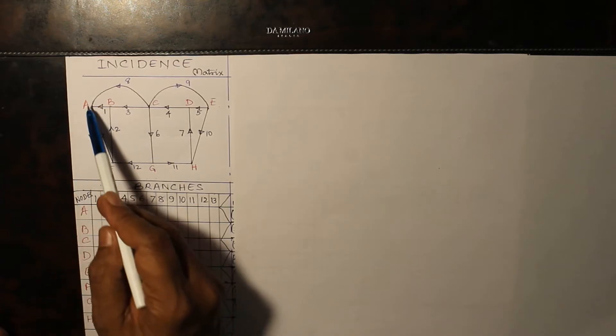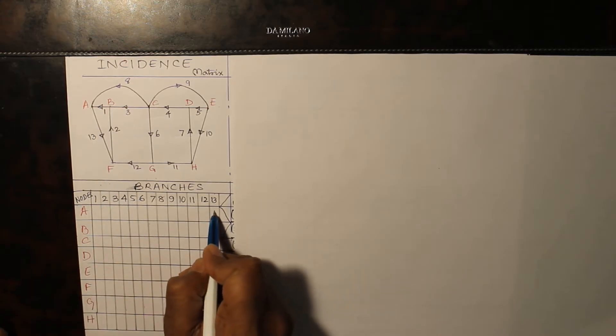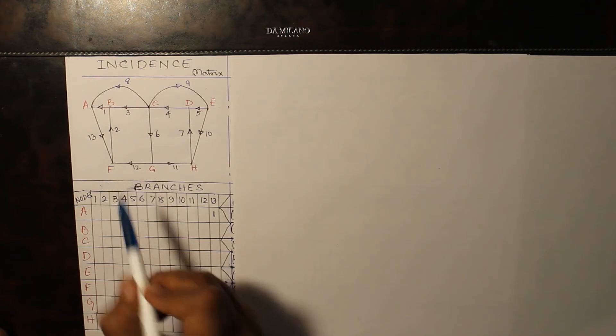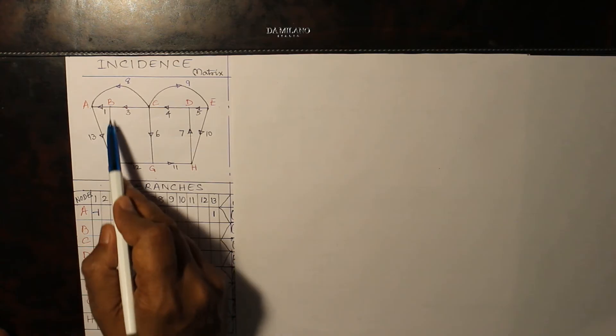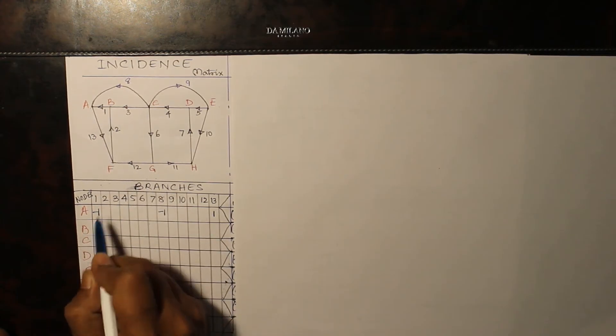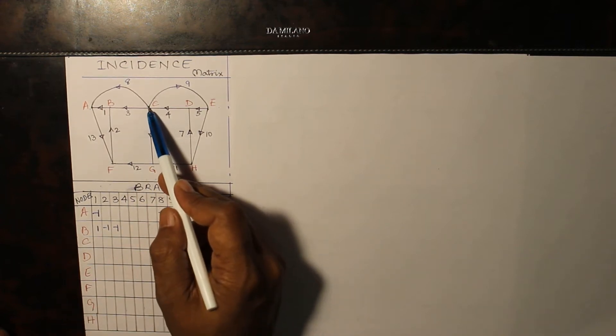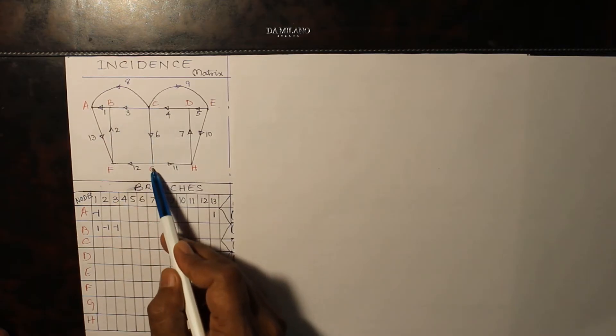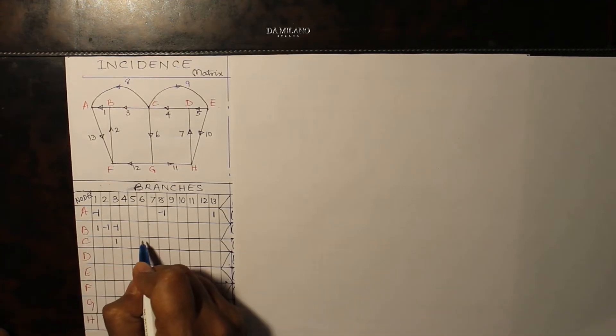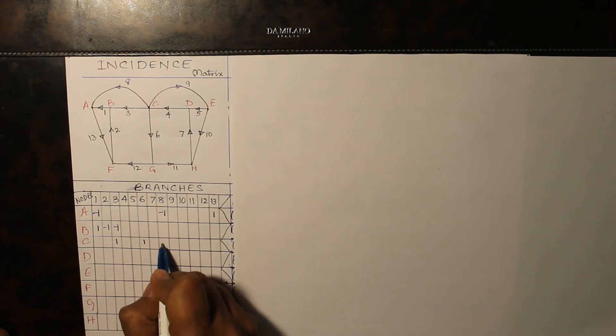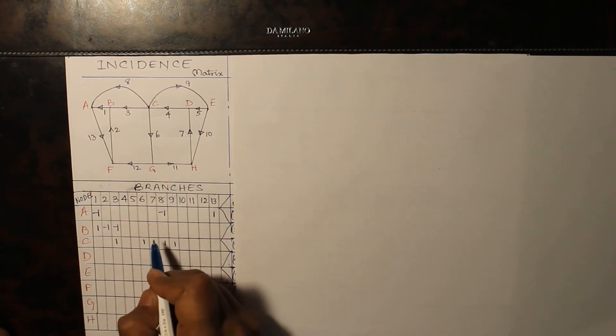From A, which are the branches going away? None. Which are the branches, sorry, 13, 13 is going away. Which are the branches coming? 1 and 8. For B, going away, 1, coming, 2 and 3. For C, going away, 9, 8 and 6 and 3. Which is the branch which is coming towards C? 4.